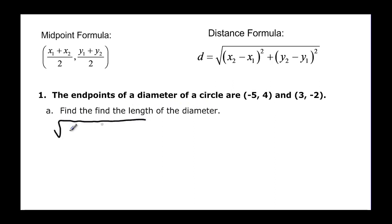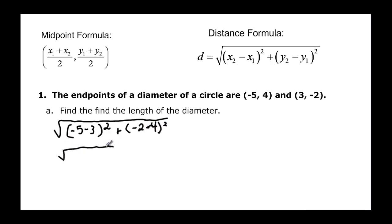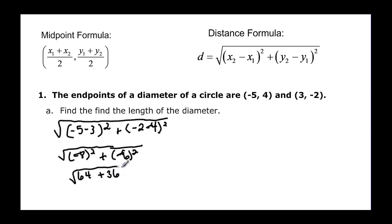The distance is the square root of the difference of the x's squared plus the difference of the y's squared. It doesn't matter what order you subtract them because we're going to square it, so sign won't matter. So we take negative five minus three, plus negative two minus four, each squared. Negative five minus three is negative eight, and negative two minus four is negative six. So we have sixty-four plus thirty-six under the radical, which is the square root of one hundred.